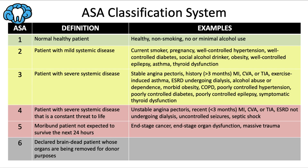For ASA 4, that's a patient with an incapacitating systemic disease that is a constant threat to life. This could be unstable angina pectoris — spontaneous chest pain with or without a stimulus — a recent (less than three months ago) heart attack, stroke, or TIA, end-stage renal disease where the patient is not undergoing dialysis, uncontrolled epilepsy or seizures, or septic shock. Elective care for these patients is contraindicated. For urgent and emergency care, we want to stick to non-invasive treatment if possible, or invasive treatment in a controlled hospital environment.